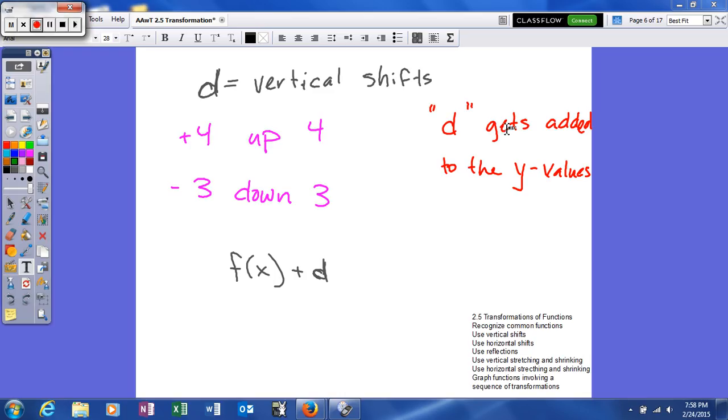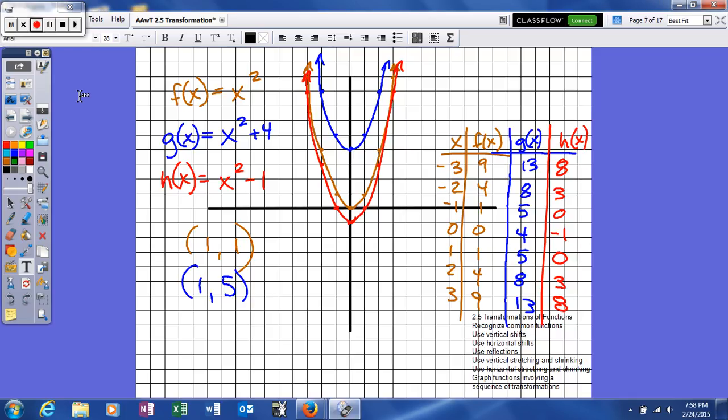And what d actually does to our graph, it gets added to the y values. So we'll look at an example here. Here's an example, so we have x squared. The graph of x squared is this brown function,